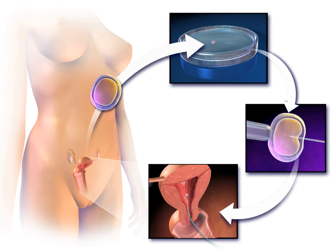When used to screen for a specific genetic disease, its main advantage is that it avoids selective pregnancy termination, as the method makes it highly likely that the baby will be free of the disease under consideration. PGD is an adjunct to ART procedures and requires in vitro fertilization to obtain oocytes or embryos for evaluation.